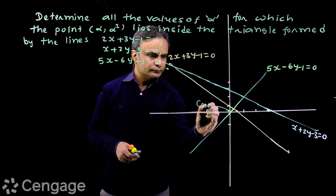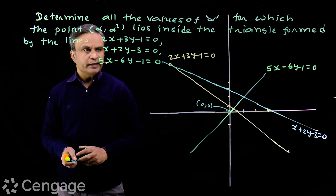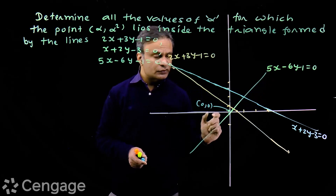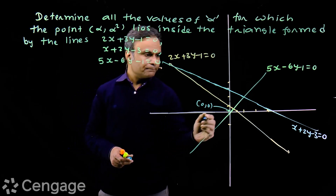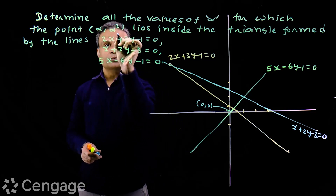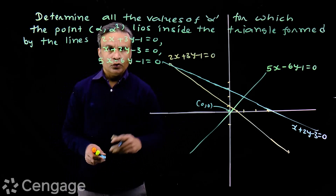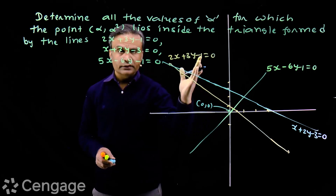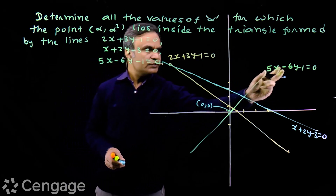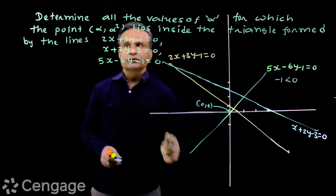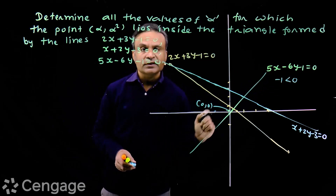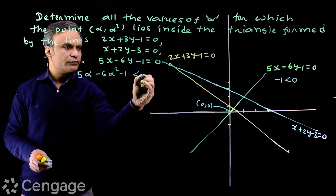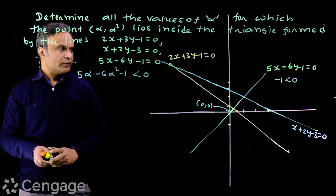Taking the lines one by one: for the green straight line 5x - 6y - 1 = 0, the origin and this point lie on the same side. The origin is on one side of this straight line, and since the point is inside the triangle, it will also be on the same side. With respect to the origin, the sign of this expression is negative, so for this point also the sign must be negative. Therefore we must have 5α - 6α² - 1 < 0. This is the first condition.